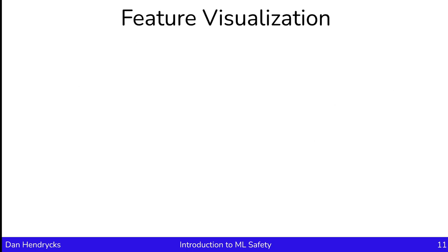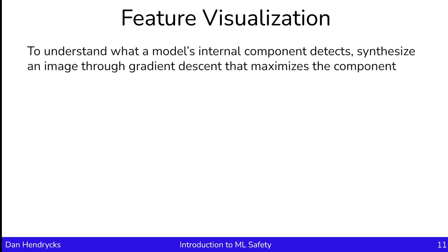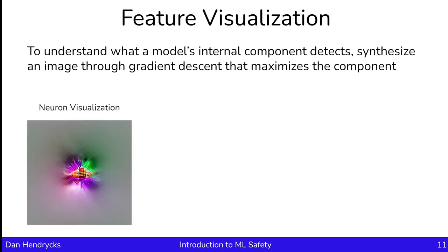Another class of transparency methods is feature visualization. With feature visualizations, we want to understand what an internal component detects. The idea for many feature visualizations is to synthesize an image through gradient descent that maximizes the component. Let's say the component is a neuron — we take some random noise as the input image and optimize it to maximally activate that neuron. The initial random noise isn't going to activate that neuron much, so the loss will be the neuron's activation amount. Through repeated rounds of gradient descent, we end up transforming that noise image into a meaningful image. This lets us visualize what the neuron is responding to.